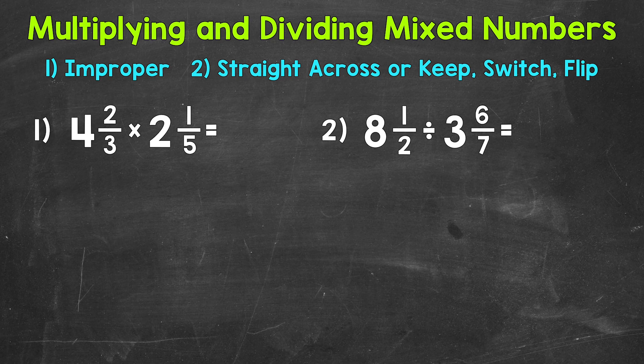Let's jump into our examples, starting with number 1, where we have 4 and 2 thirds times 2 and 1 fifth. Now the first thing that we want to do here is to convert these mixed numbers to improper fractions.